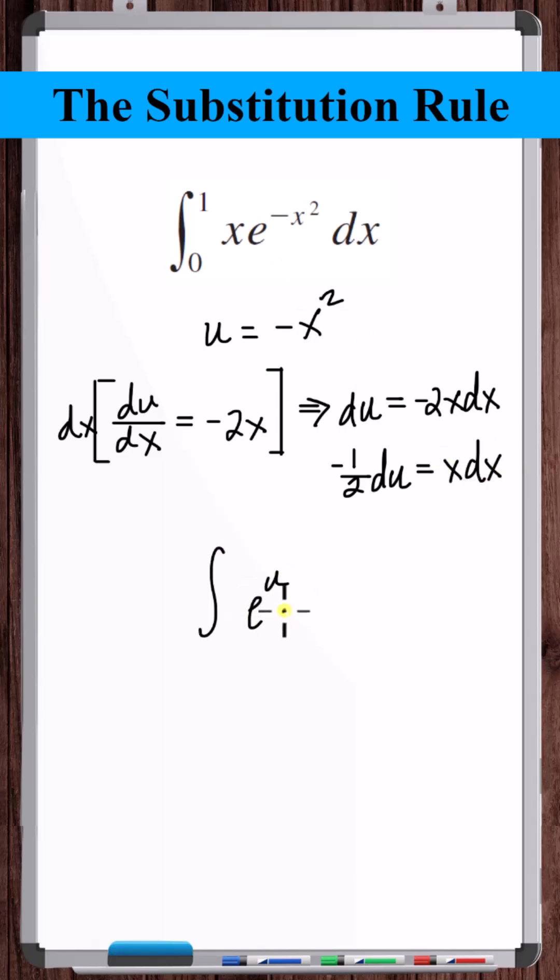Now let's make these substitutions into the integral. We can also update the limits of integration based on the substitution. When x is equal to zero, u is equal to zero. When x is equal to one, u is equal to minus one. Therefore, evaluating this definite integral.